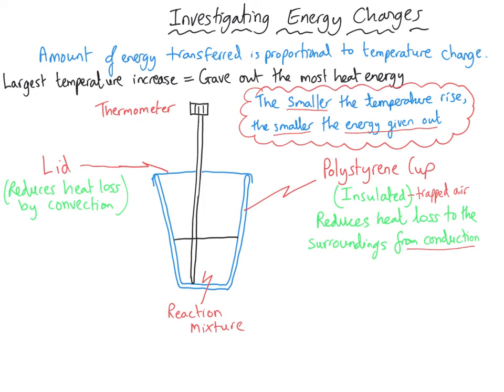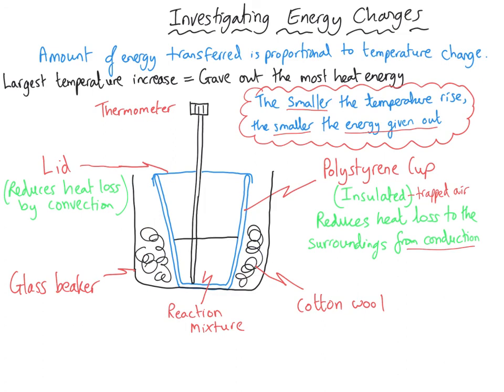We have a hole in the top for the thermometer to go through into the chemicals, because we need to measure the temperature change, but the lid minimizes heat loss to the surroundings. We could even put our polystyrene cup inside an additional beaker packed with cotton wool, which is fluffy and has even more trapped air, further minimizing heat energy loss. This means we can be confident that the temperature change we measure is as close to the true value as possible.